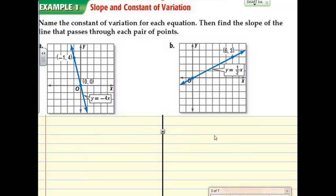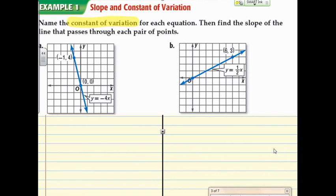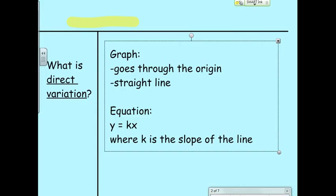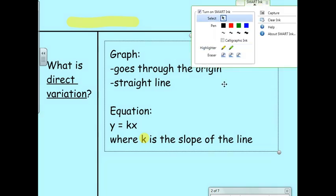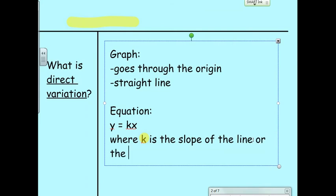Now, in our first example, we're going to name the constant of variation for each equation. So that's the big idea here, that constant of variation. And then we're going to find the slope of the line that passes through each pair of points. And that makes me think I should go back and give this a new name. So I'm scrolling back a page. I'm going to add one thing to my notes from before. k is the slope of the line, and some people refer to that as the constant of variation. So the constant of variation is important. That's the same thing as slope.